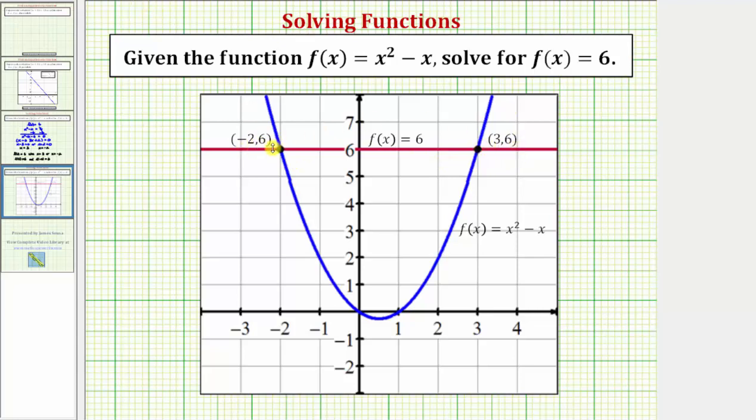The point negative two comma six tells us that f of negative two equals six, and the point three comma six tells us f of three also equals six. So once again, the inputs or x values of negative two and positive three both give function values or outputs of positive six. I hope you found this helpful.